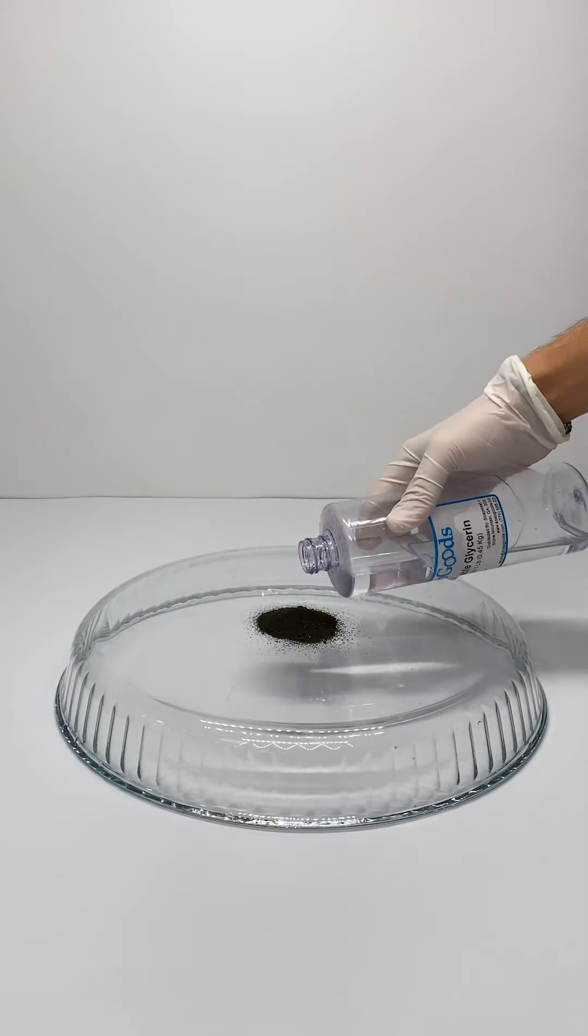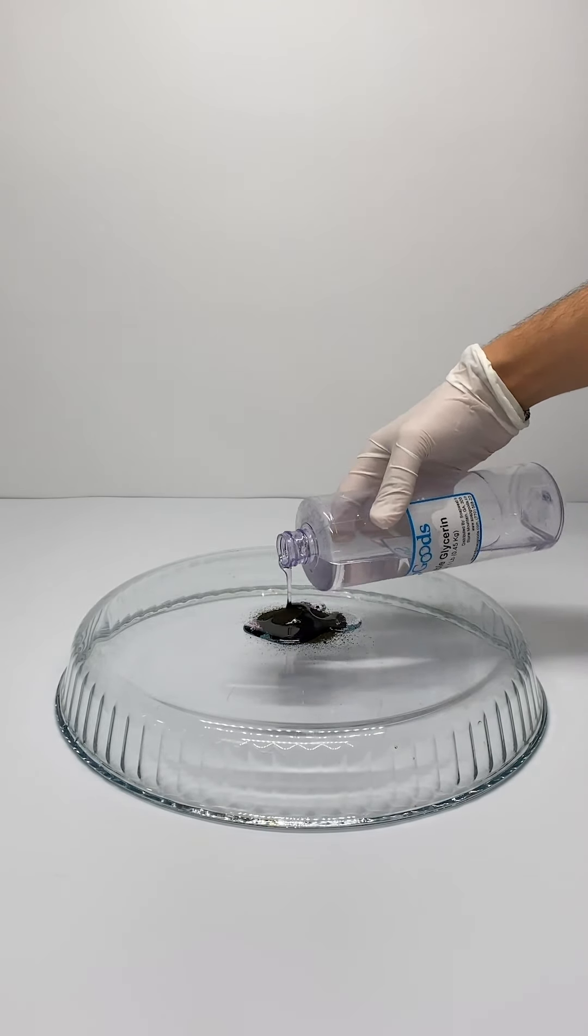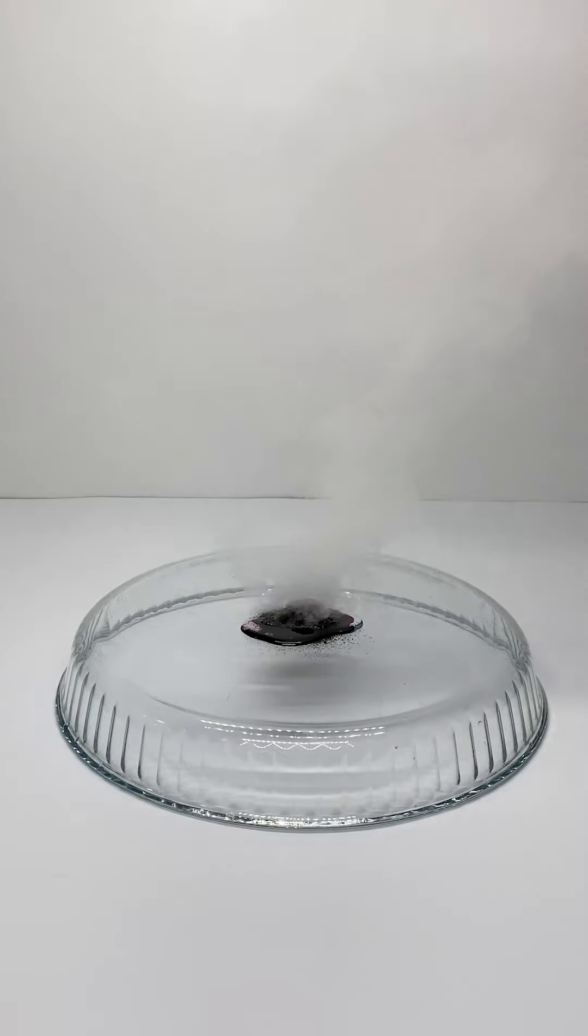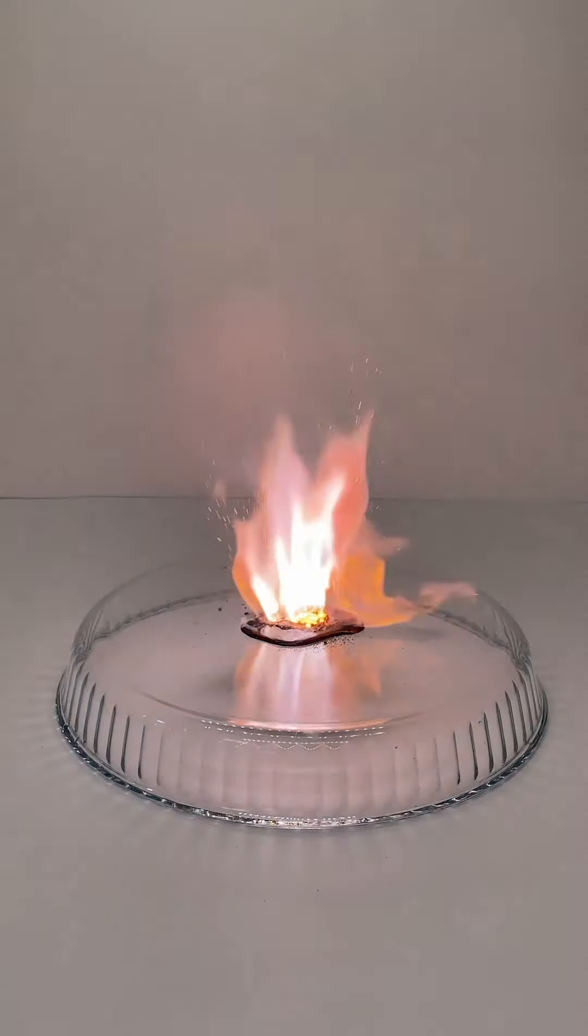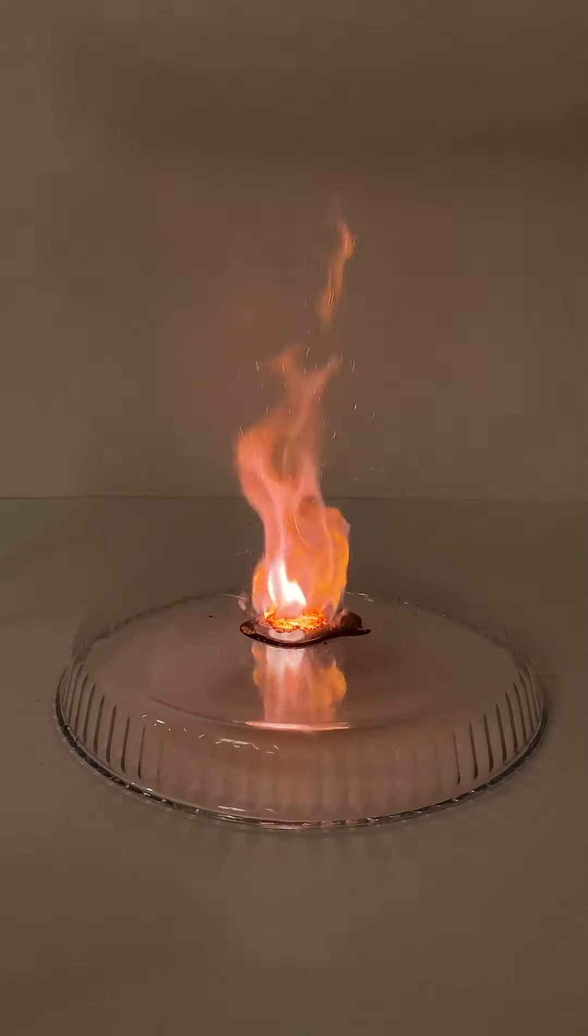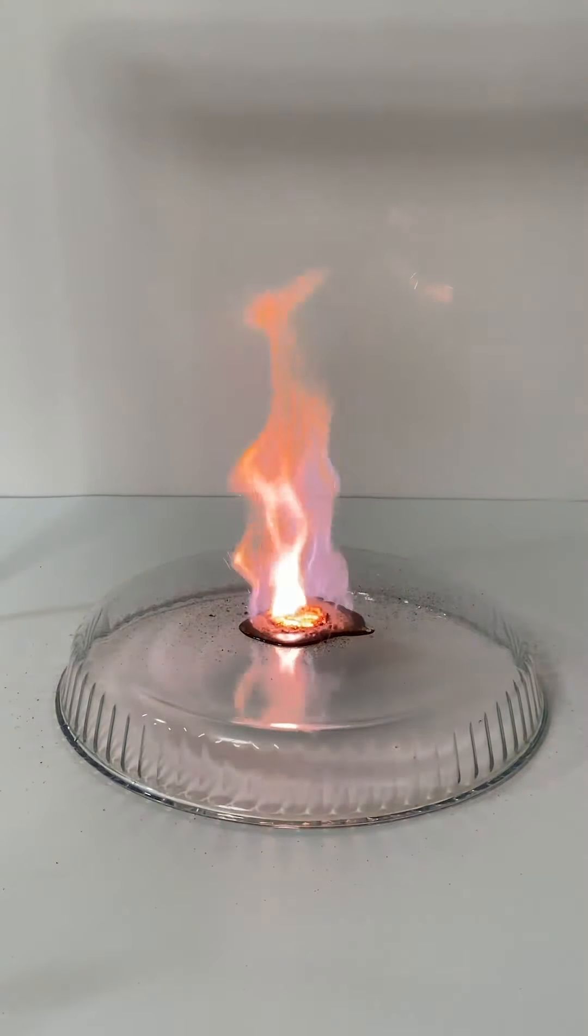This is potassium permanganate, a strong oxidizing agent. Potassium permanganate oxidizes the glycerin and causes it to catch fire. The color of the flame is purple because cations of potassium release purple light.